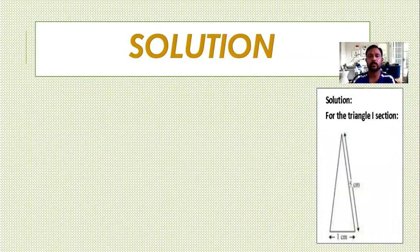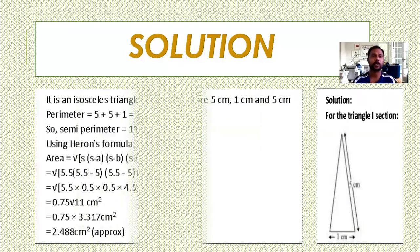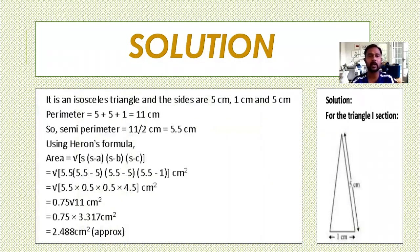Here is the first part. Solution for the triangle 1 section. It is an isosceles triangle with one side 5, another side 5 cm and third side 1 cm. Let us apply here Heron's formula. Therefore, semi-perimeter is 5 plus 1 plus 5 by 2, which is 11 by 2 that is 5.5 cm.